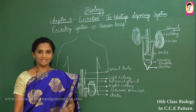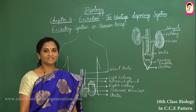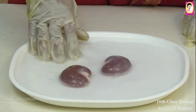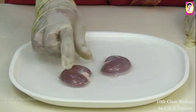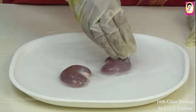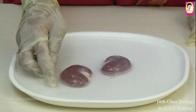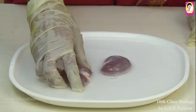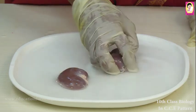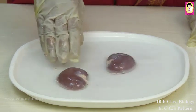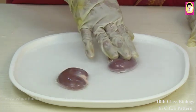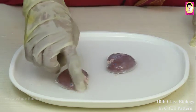Now let us see the lab activity where we are going to dissect the kidney and study its parts. Here we can see one pair of goat kidneys for demonstrating the internal and external kidney structure. I have arranged the kidneys so that one is on the lower side and one is on the upper side — our kidneys are also located like that, with the right kidney slightly lower and the left kidney slightly higher.